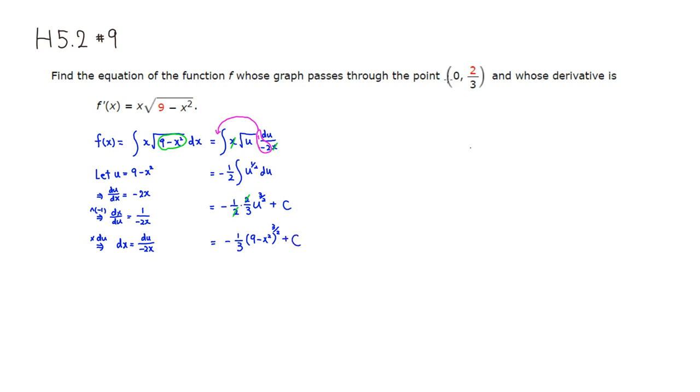Then since this tells you that we have to go through 0 comma 2 and 2 thirds, so we know that f of 0 has to be equal to 2 thirds. Let's use that to find c.